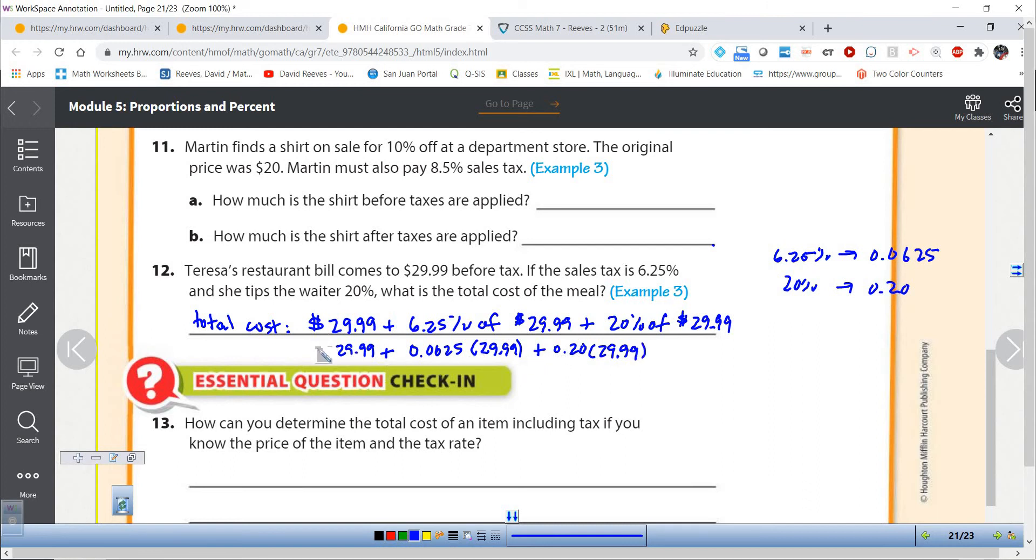$29.99 is just $29.99. Remember, 6.25% is 0.0625 because we always change our percents to decimals when we're going to multiply. And 20% is going to be 0.20. So this is going to be 0.0625 times $29.99, and 0.20 times $29.99. Now, I could put all of this in the calculator separately, or I'm going to remind you, if I have 1 plus 0.0625 plus 0.20, all of those are each getting multiplied by $29.99. I can add all those percentages together.